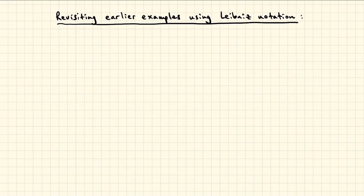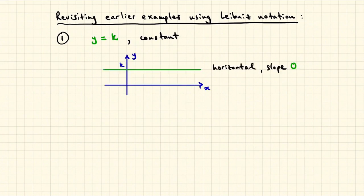Let's revisit some earlier examples but interpreted or expressed using Leibniz notation. First, if y equals k is a constant function, then the graph is a horizontal line with no change in the y value giving slope 0 everywhere. So dy dx is 0.